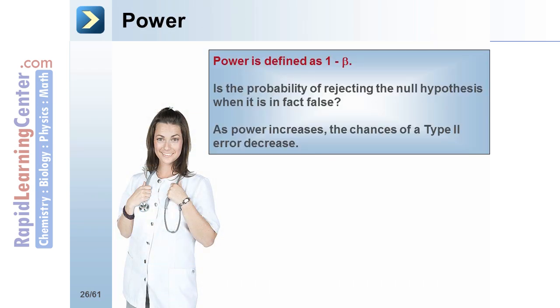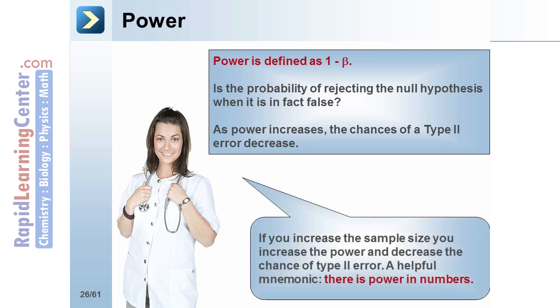Power is defined as 1 minus beta. It is the probability of rejecting the null hypothesis when it is in fact false. As power increases, the chances of a type 2 error decrease. It depends at a minimum on the statistical significance criterion used in the test and the magnitude of the effect. It may also depend on the total number of endpoints experienced by the observed population and the difference in compliance between treatment groups. If you increase the sample size, you increase the power and decrease the chance of a type 2 error. A helpful mnemonic is: there is power in numbers.